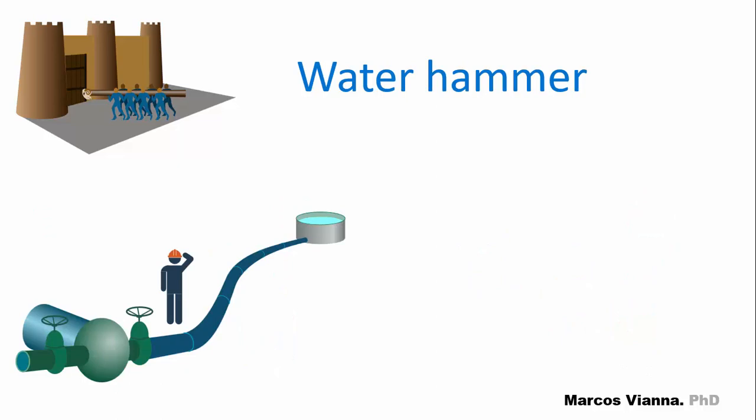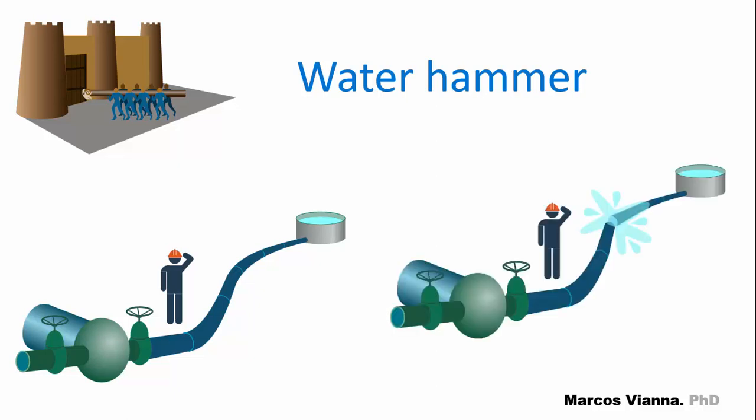If the pump suddenly stops working, which can be caused by a power failure, pressures greater than what the pipe can withstand can occur along the pipeline.